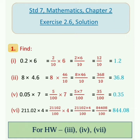Now sum number 5: 0.05 into 7. We can write 0.05 as 5 upon 100, into 7 is equal to 5 into 7 upon 100, is equal to 35 upon 100, is equal to 0.35. Now sum number 6: 211.02 into 4 is equal to 21102 upon 100 into 4, is equal to 8408 upon 100, is equal to 844.08. Is it clear, everyone?